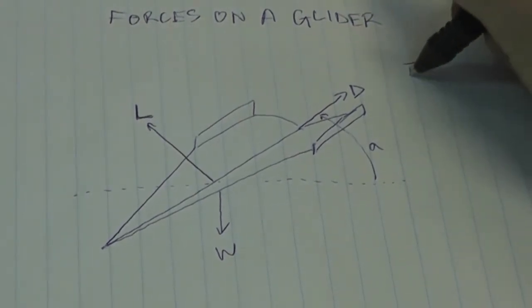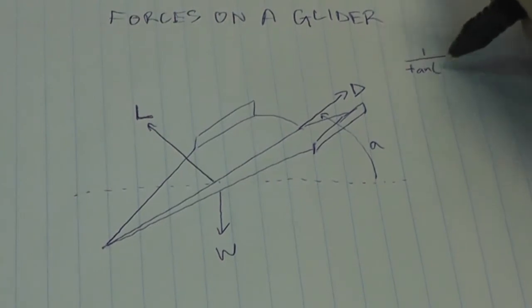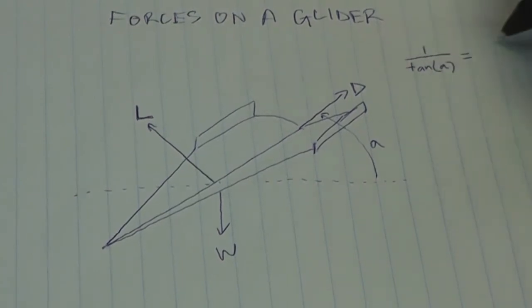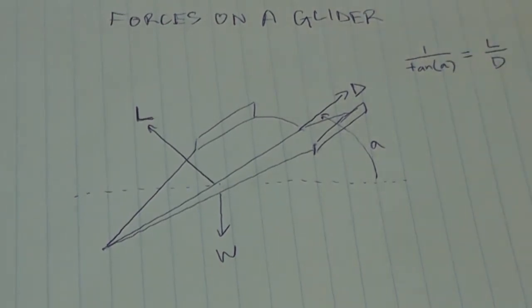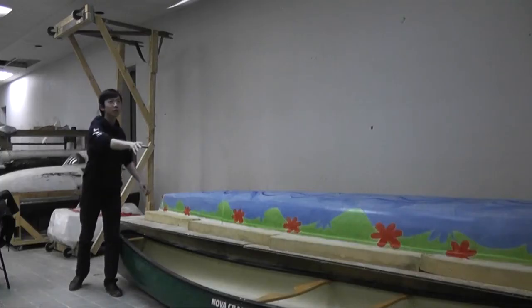As it just so happens, we have that 1 over the tangent of that angle is equal to the ratio of your lift force to your drag force. So what actually happens when you throw a paper airplane?